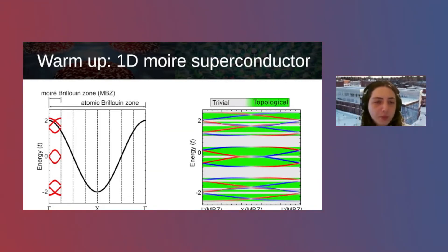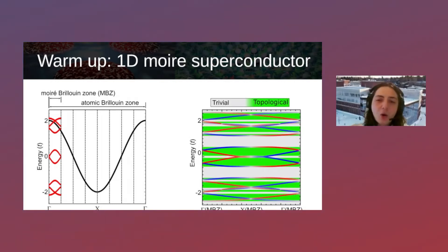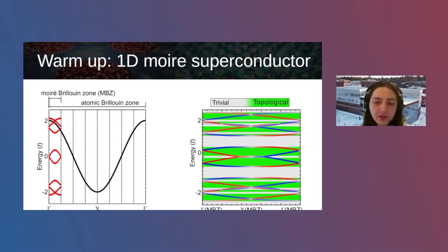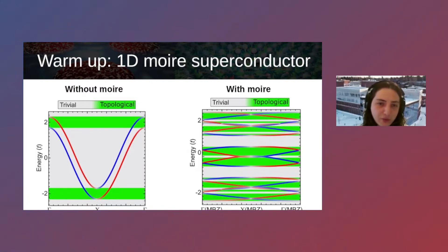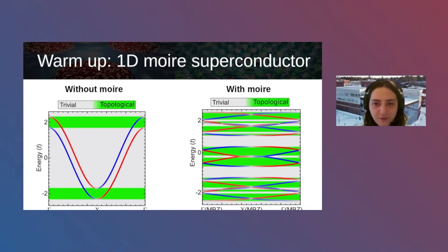With the folded band structure driven by the moiré pattern, topological superconductivity can be achieved in many more energy windows — every time there is a miniband top or miniband bottom. Comparing the regions where topological superconductivity can occur without versus with the moiré, the moiré pattern essentially increases by a lot the range of energy windows where topological superconductivity is possible. This simple idea tells us that moiré patterns in two-dimensional materials are very likely to help realize topological superconductivity.